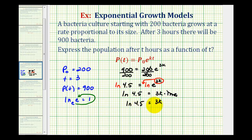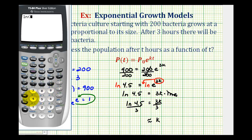To solve for k we divide both sides by three. This quotient gives us our exponential growth rate, so we go to the calculator: natural log of 4.5 divided by three. Using six decimal places for accuracy, k is approximately 0.501359.